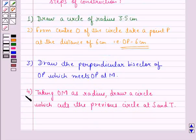Step 4: Taking OM as radius, draw a circle which cuts the previous circle at the points S and T.